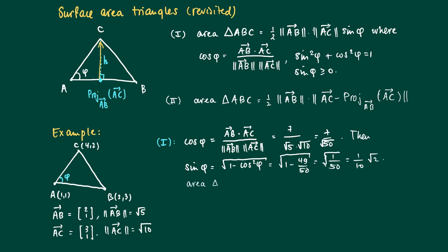Now we may calculate the area using the formula above. It's one half times the length of AB, which is the square root of 5, times the length of AC, the square root of 10, times the sine of phi, which is 1 over 10 times the square root of 2. We obtain one half.